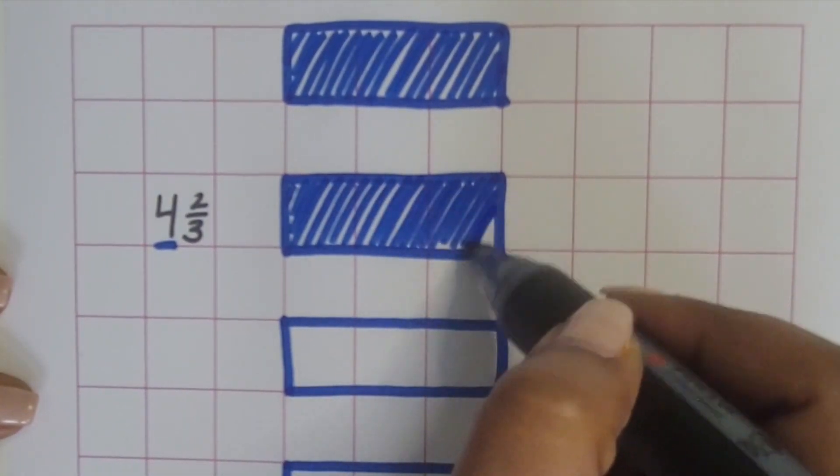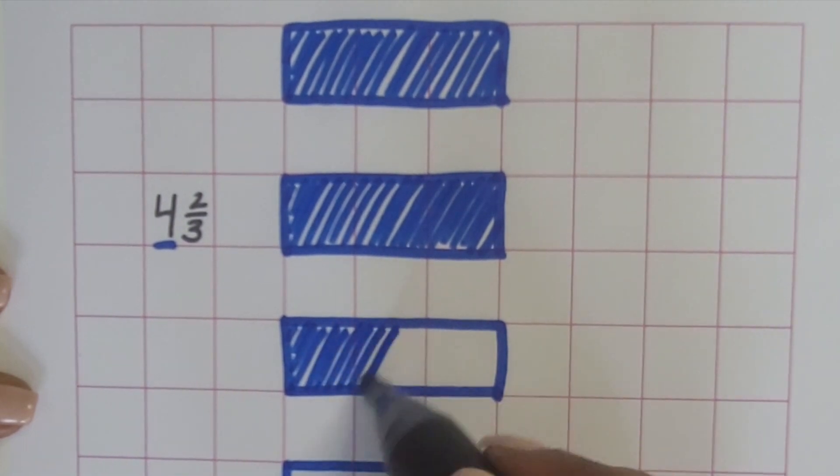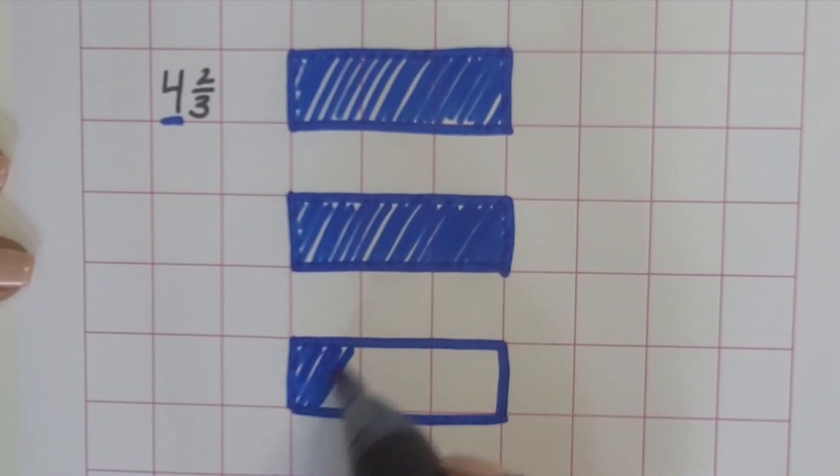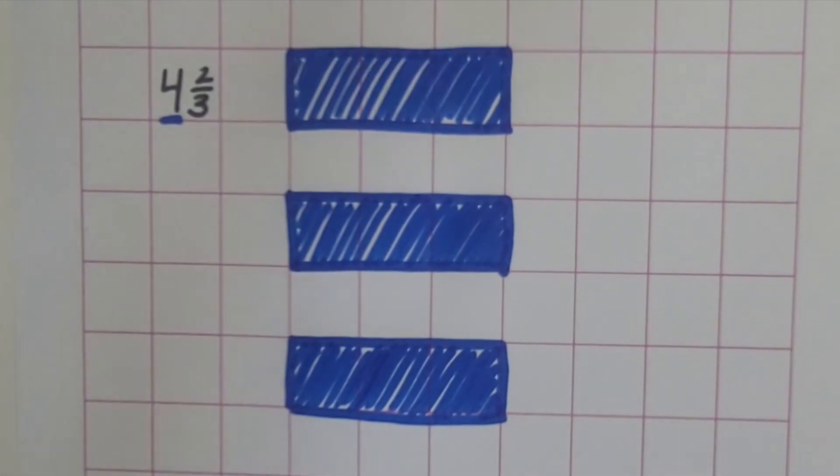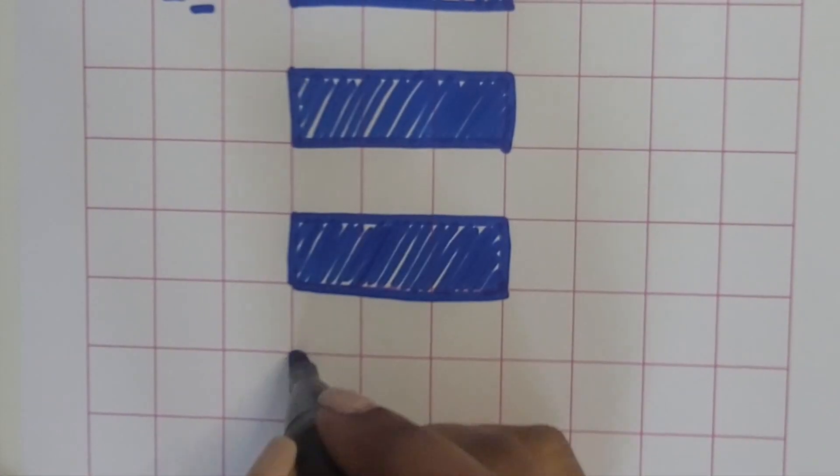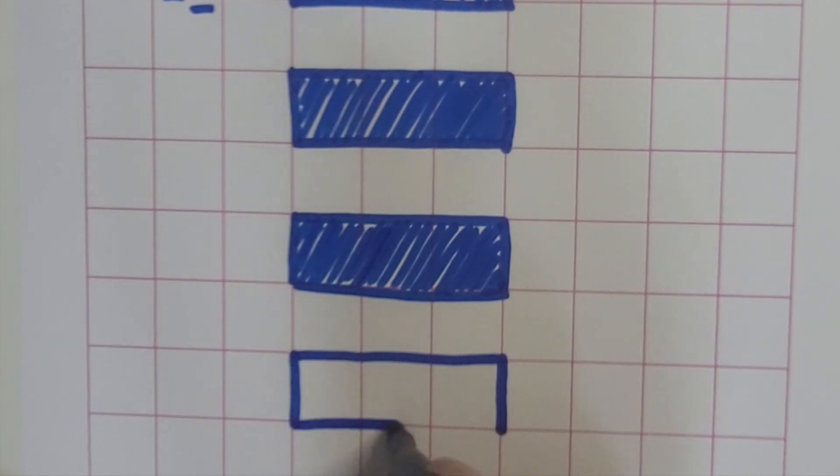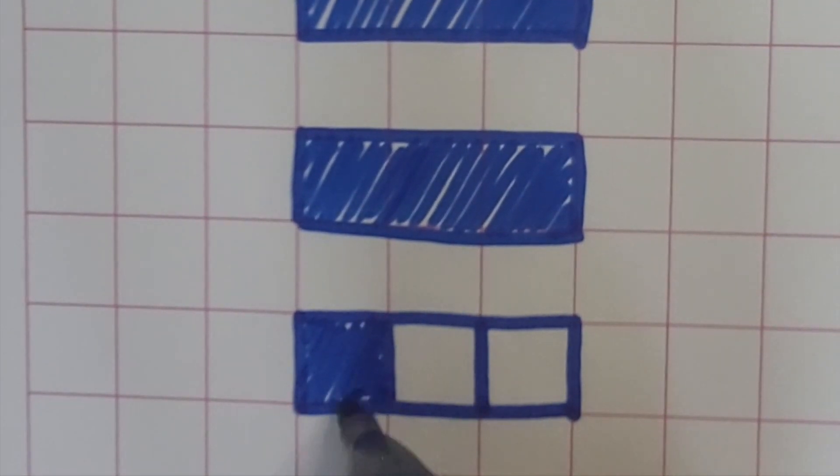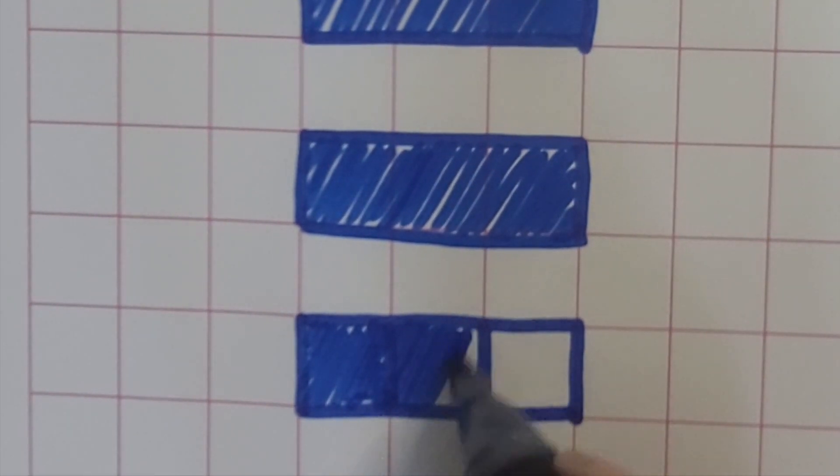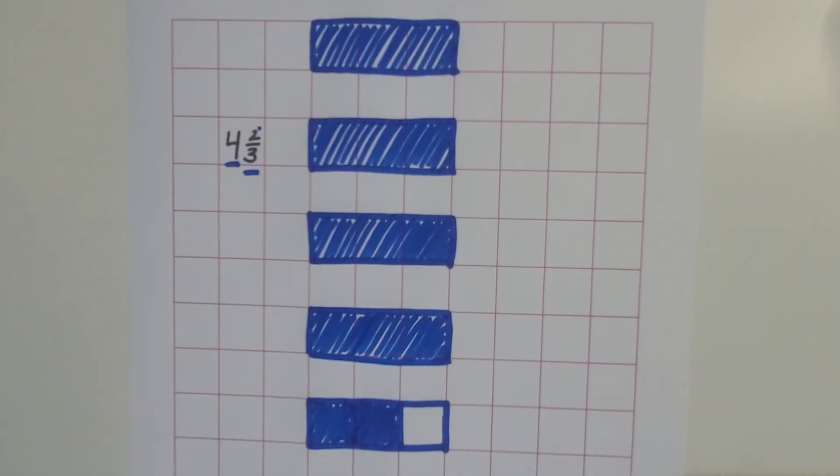Shading in one whole, two wholes, three wholes, four wholes, and then we need to draw a part that shows the two-thirds. We're going to draw a fifth whole, partition it into thirds, and then shade only two of the thirds in—four and two-thirds.